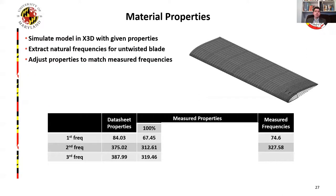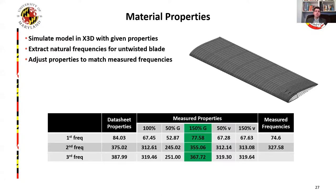These updated properties are then used in the X3D model. With the new properties, we see that while X3D now under-predicts the measurement, the error is greatly reduced. To further refine the model, the properties were slightly tweaked — varying both the shear modulus and the Poisson's ratio — to try to improve the correlation. It was found that increasing the shear modulus by 50% provided the best correlation with the measured blade, though it is still slightly over-predicted.